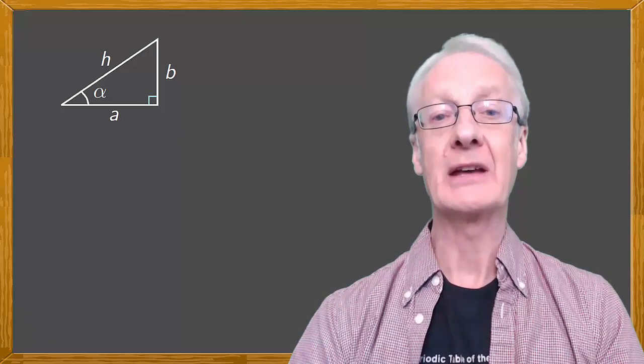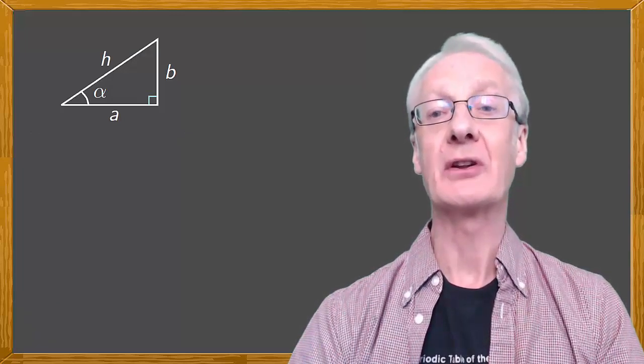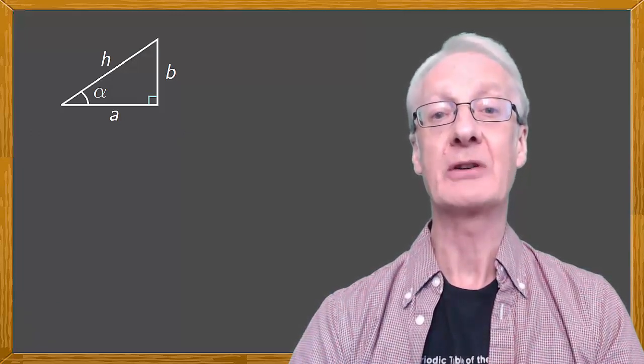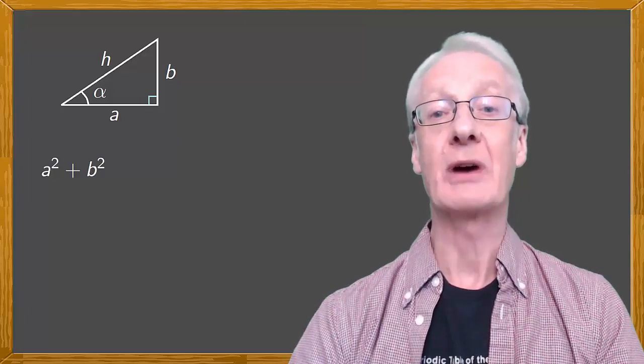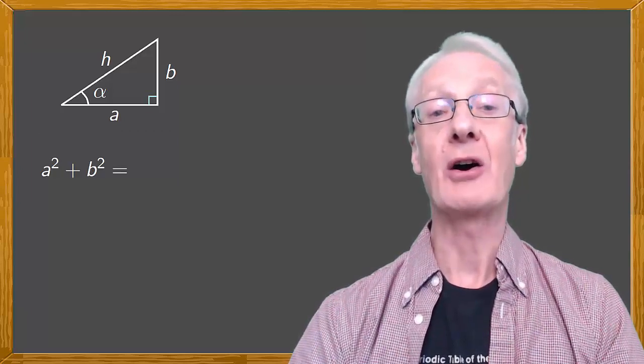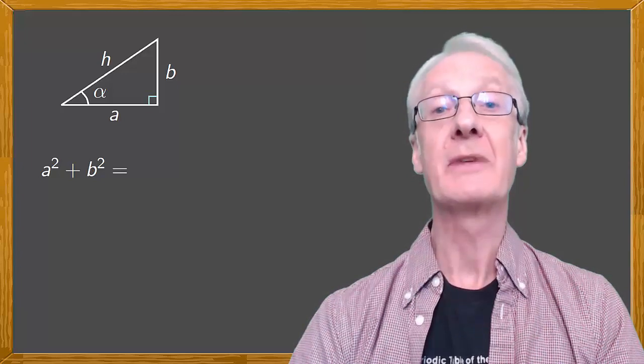Pythagoras' theorem says that the sum of the squares of the length of the cathety, in our case a squared plus b squared, is equal to the square of the length of the hypotenuse, h squared.